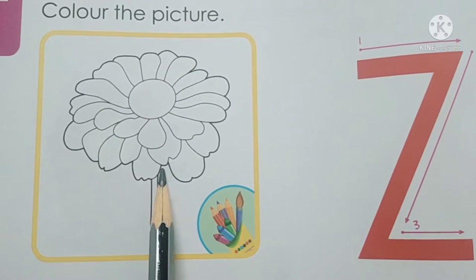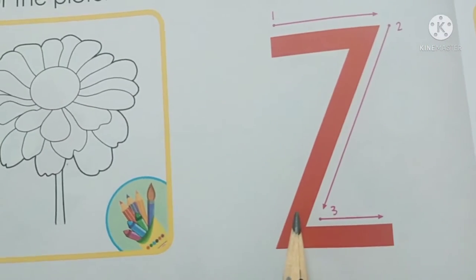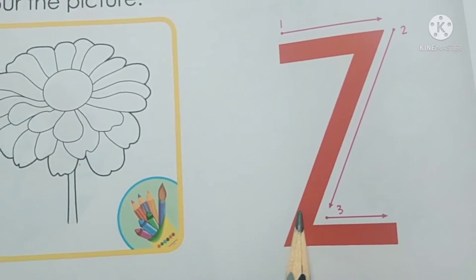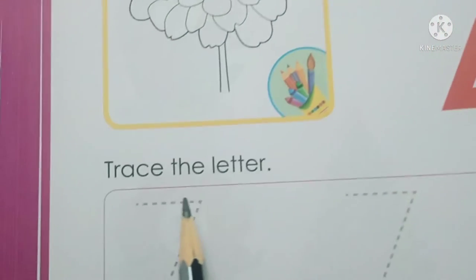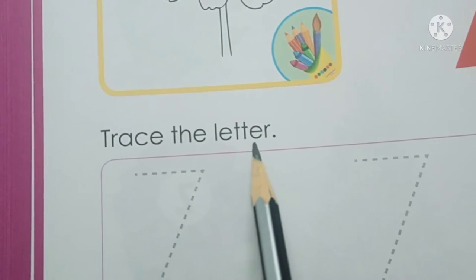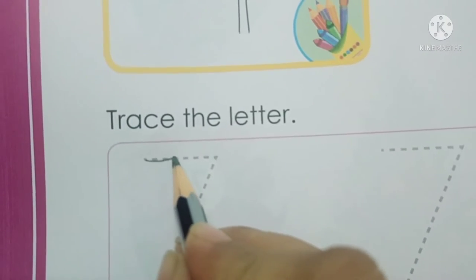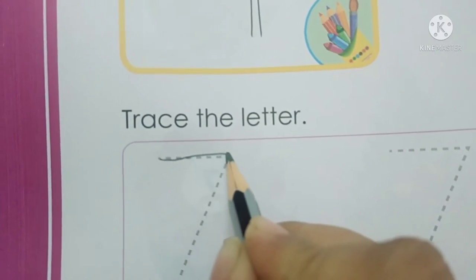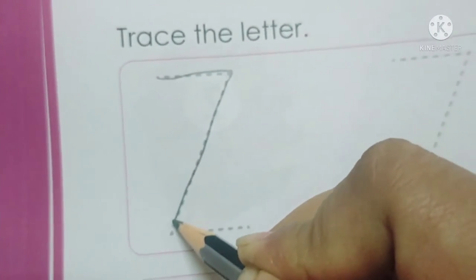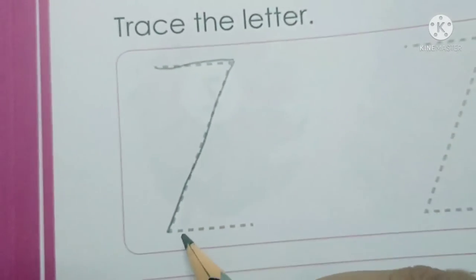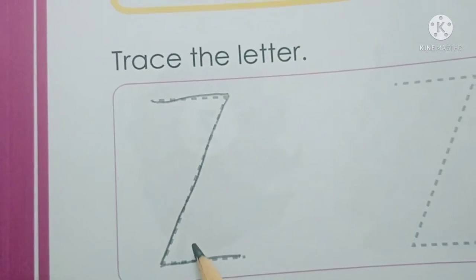You can fill your favourite colour in this picture. This is Z, the last letter of the alphabet. So let's start tracing work. Sleeping line, slanting line, sleeping line — Z.